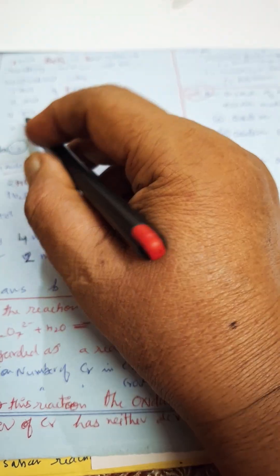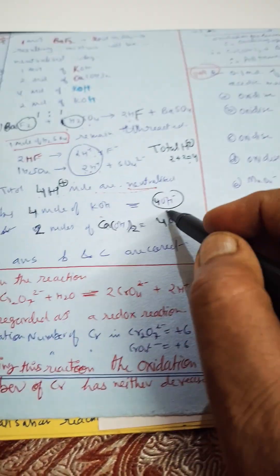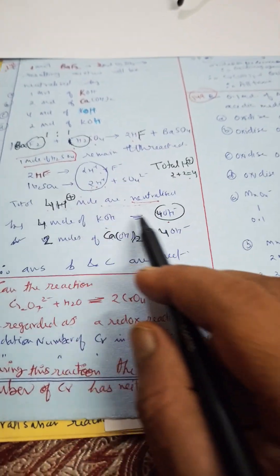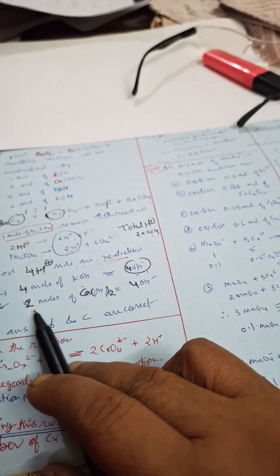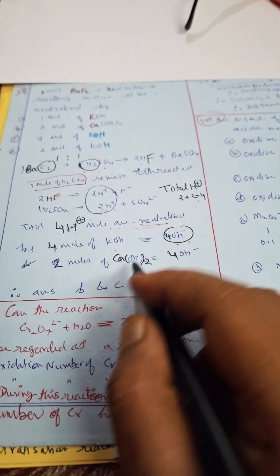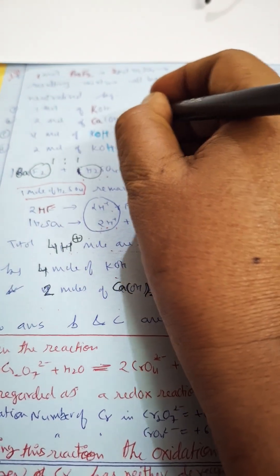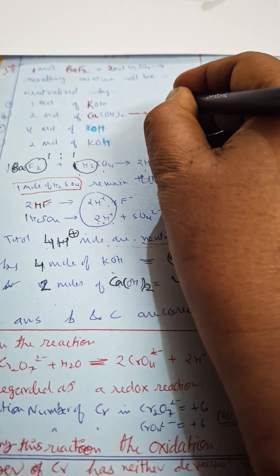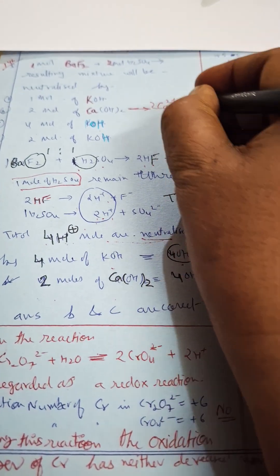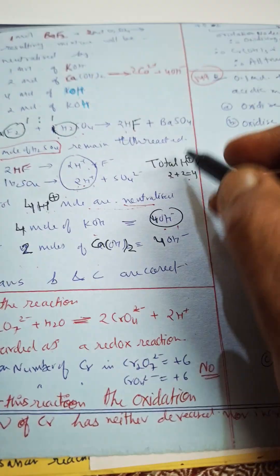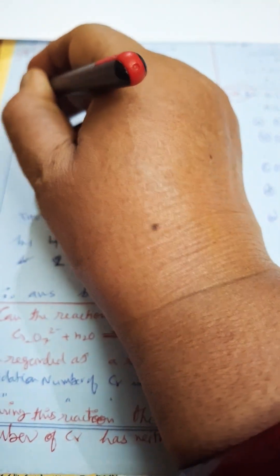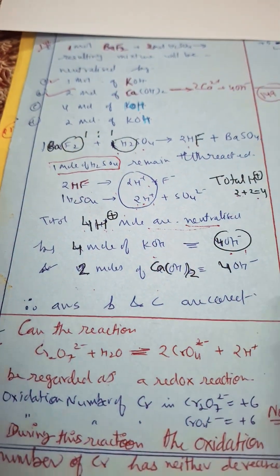Then we will see where this four moles of KOH is. Okay yes, because four moles of H+ will be neutralized by only four moles of OH-. And this is also correct: two moles of Ca(OH)2 will ionize and will give you two moles of Ca2+ plus four moles of OH-. Right, so yes it is right, so A and B are the correct answers.